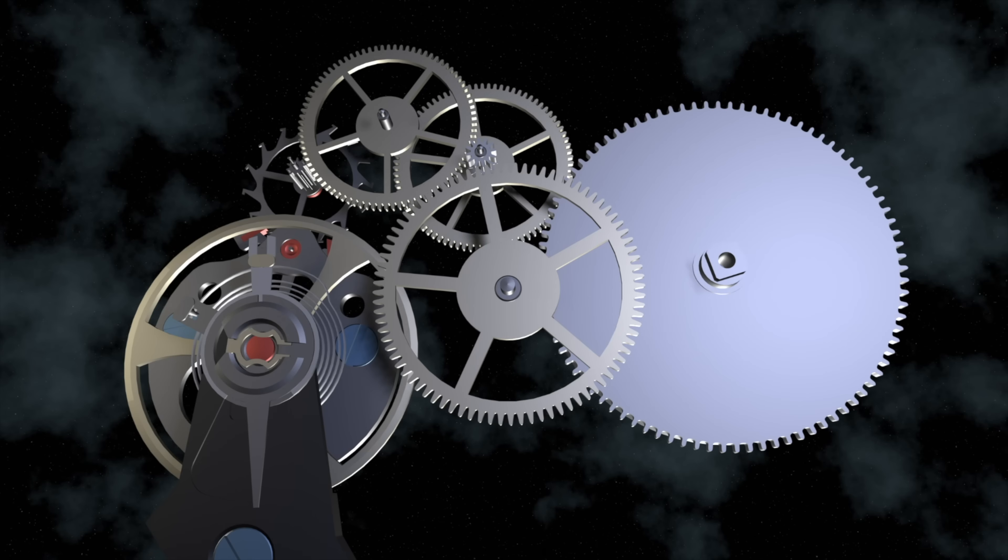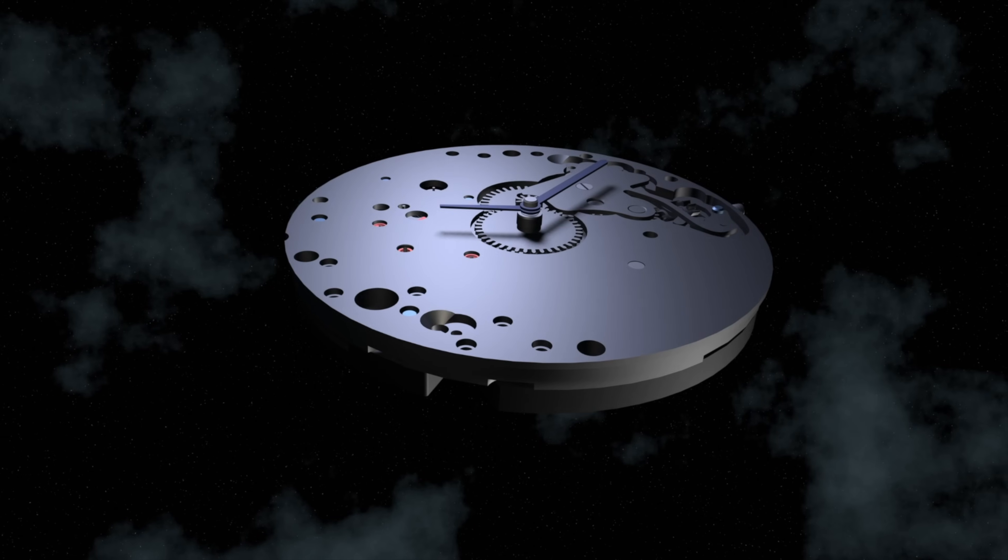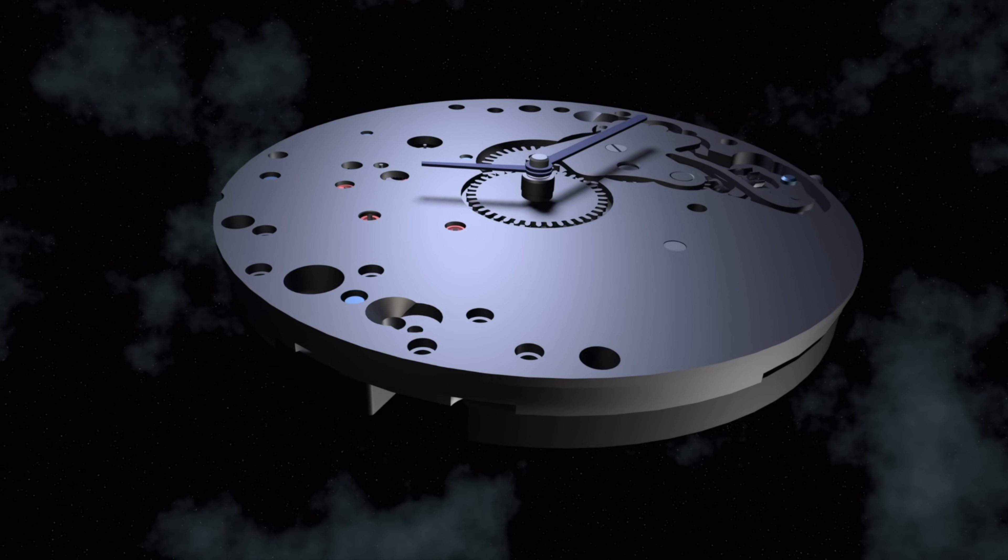So to recap, the barrel holds the mainspring and the energy. As it unwinds, this sets the gear train in motion, which pushes that energy to the escapement. The escapement, pallet fork and escape wheel, then distribute the energy. The balance wheel and hairspring then regulate that energy. Now we know what makes a watch tick.